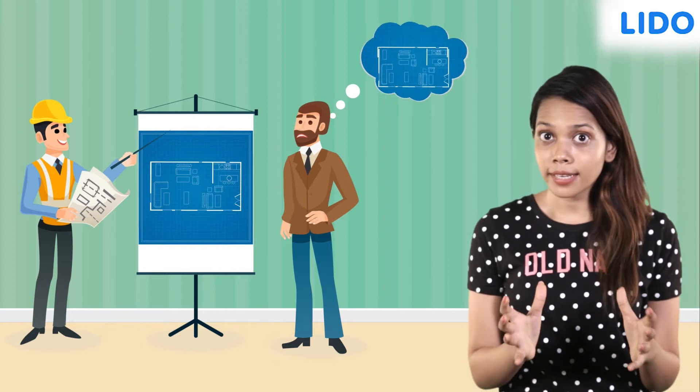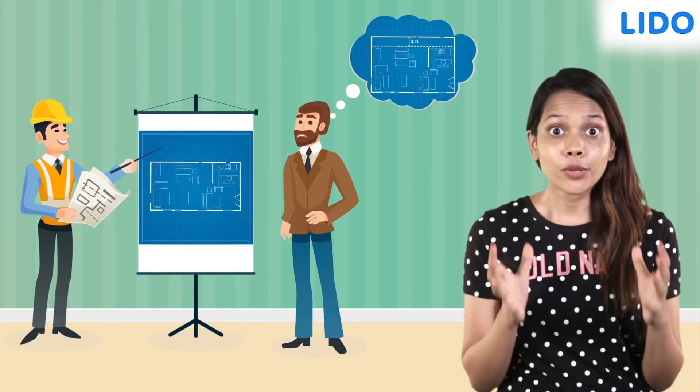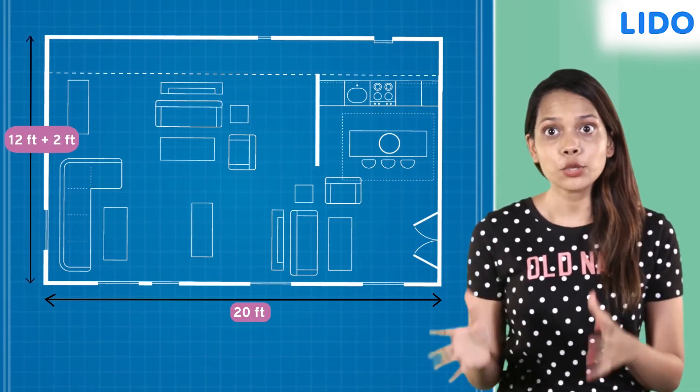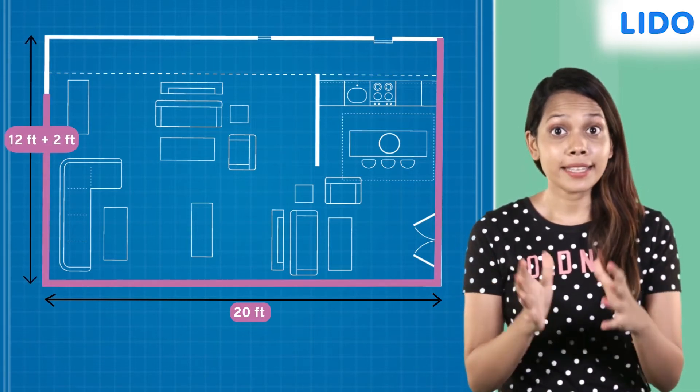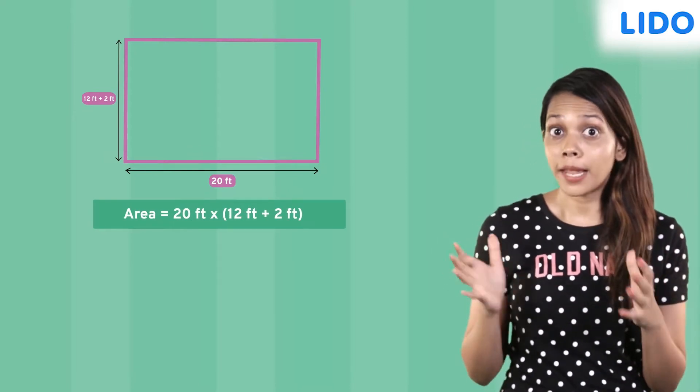He asked the architect to increase the breadth of the living room by 2 feet to have a bookshelf on one side. The new dimensions of the room will be 20 feet by 12 plus 2 feet. This makes the area of the living room 20 times 12 plus 2.